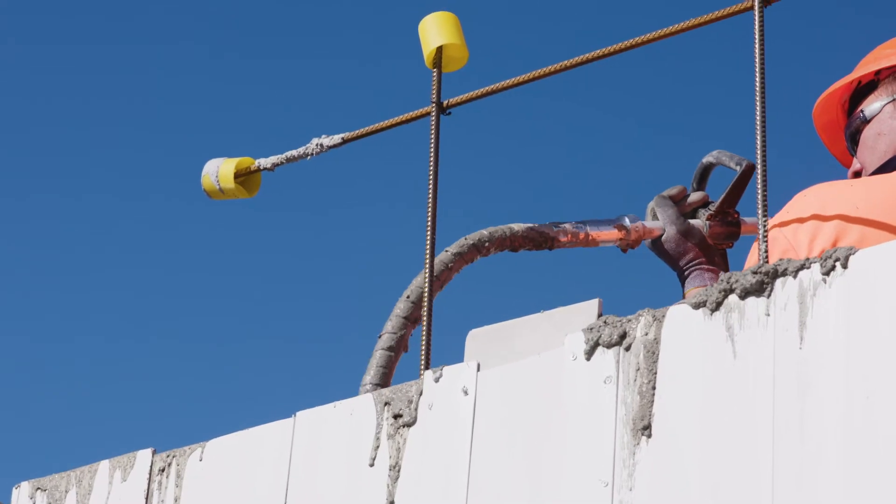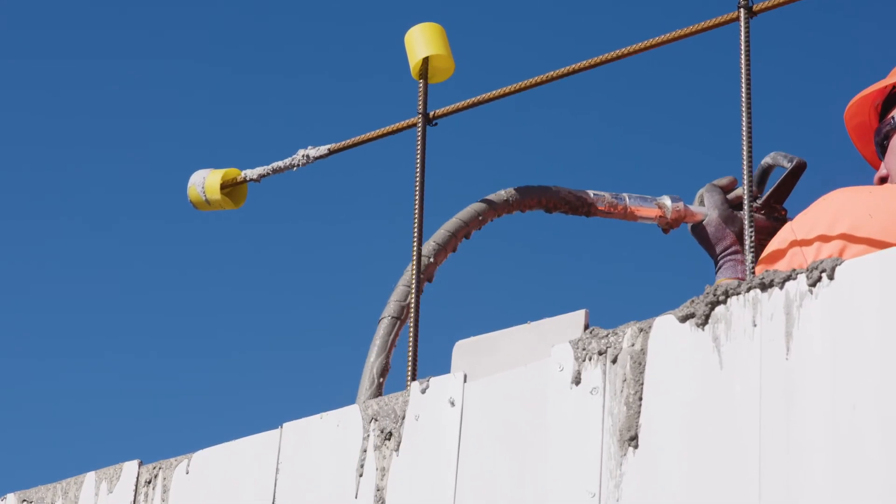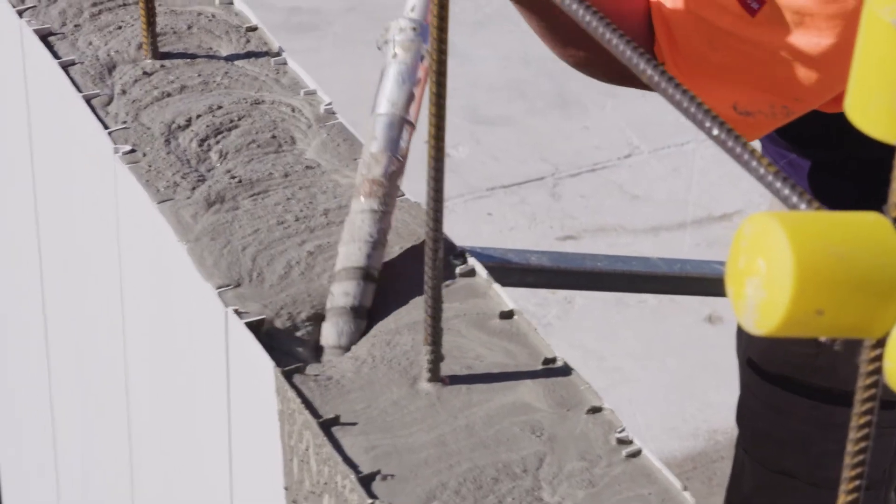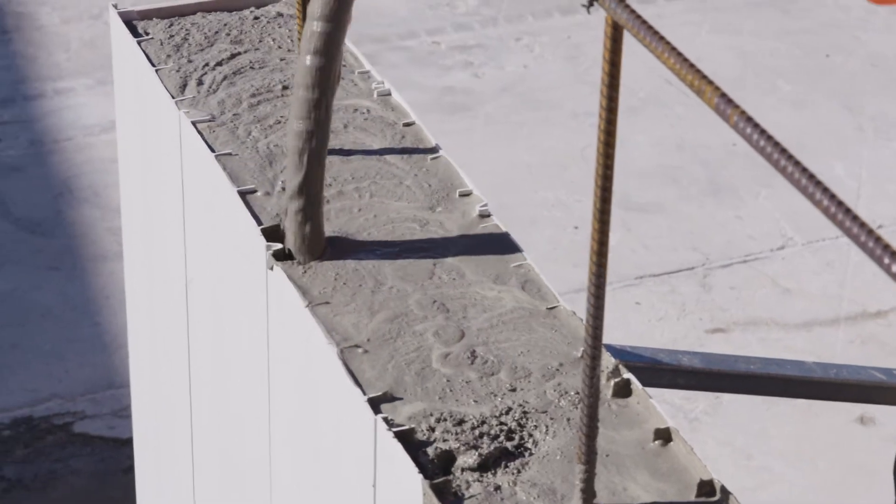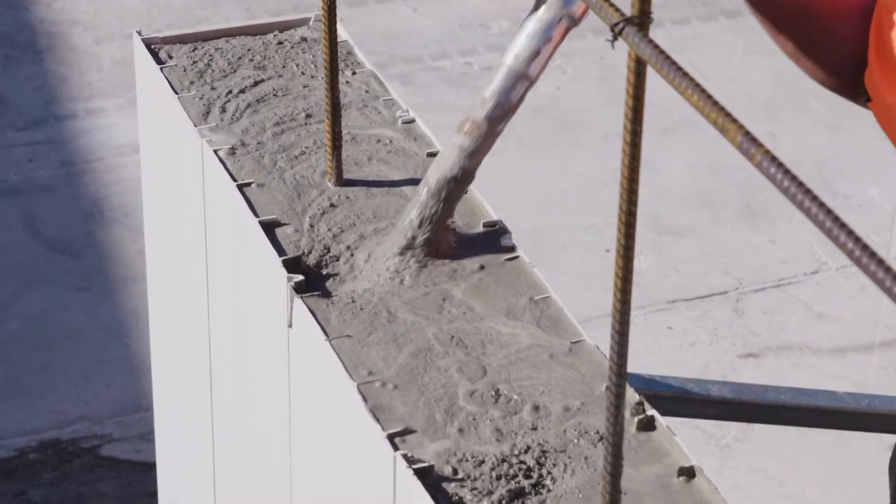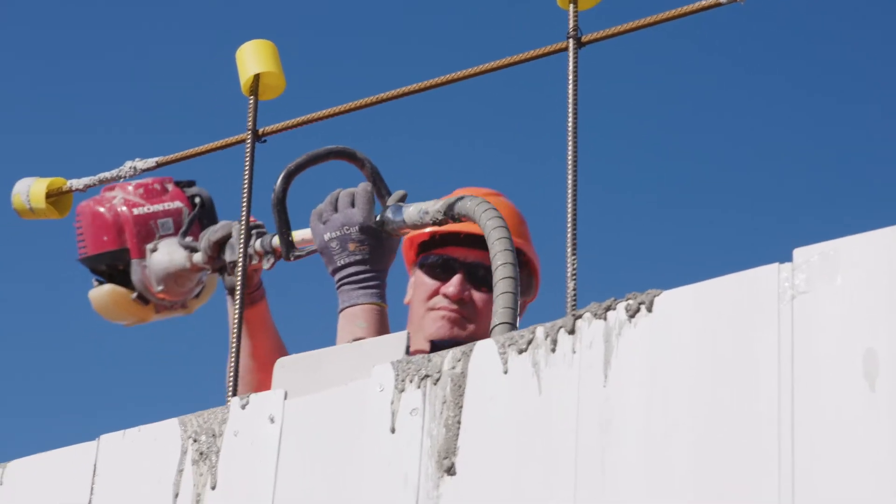Continue until no further air bubbles develop on the surface of the concrete. Repeat every 300-400mm intervals along the pour. Care should be taken when vibrating not to directly vibrate the reinforcing steel to ensure a homogenous concrete wall.